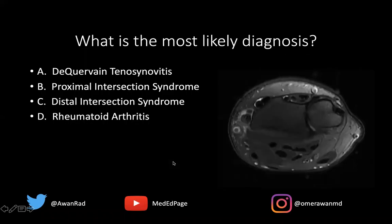The question I have for you is: what's the most likely diagnosis here? Is this a case of De Quervain's tenosynovitis, proximal intersection syndrome, distal intersection syndrome, or rheumatoid arthritis? What's the most likely diagnosis?